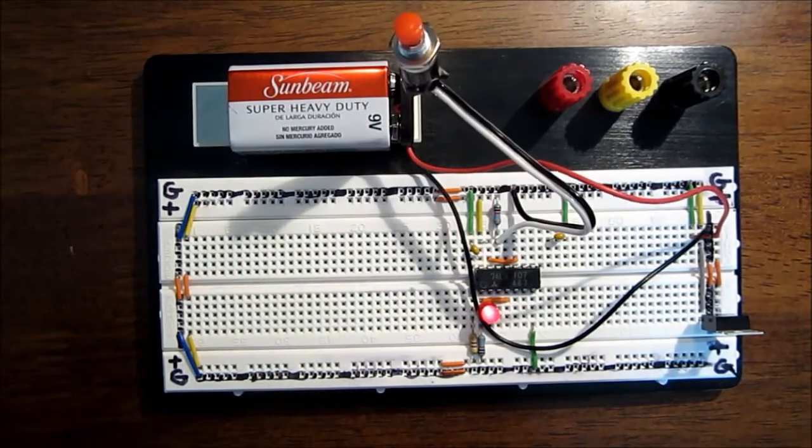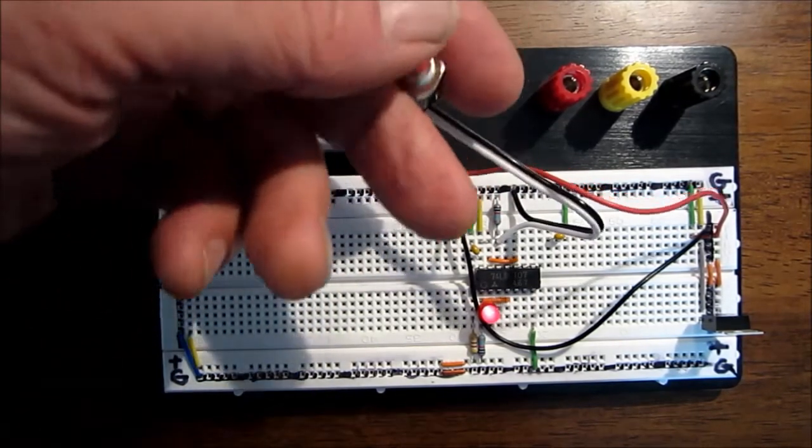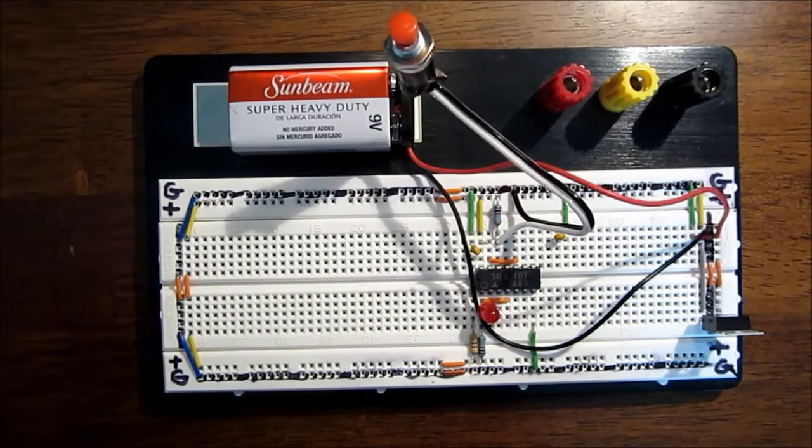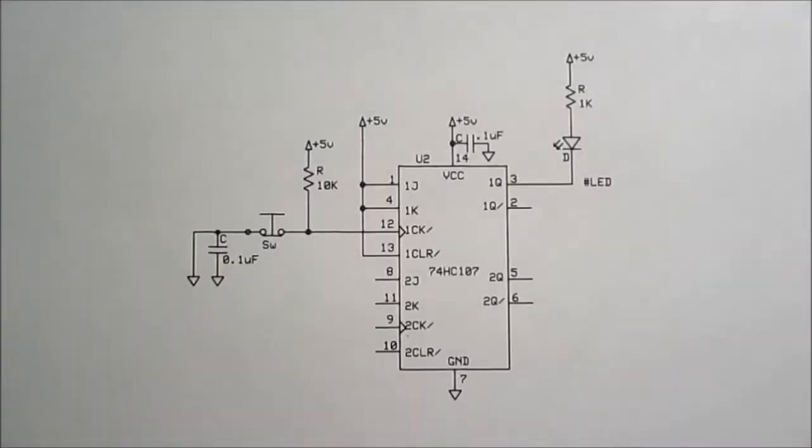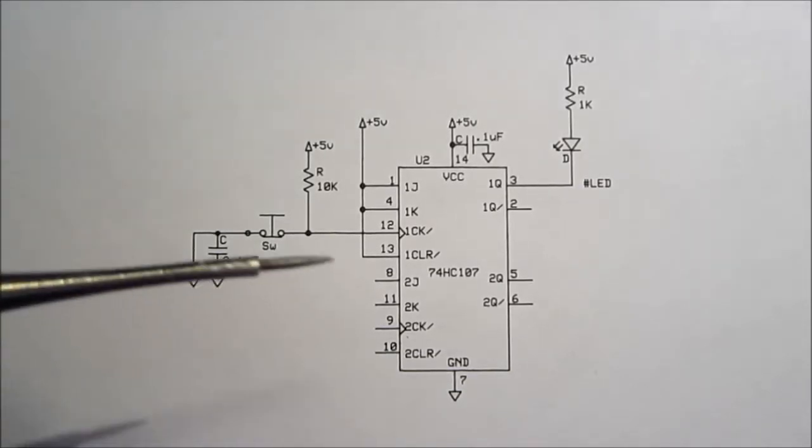So he goes, oh, I must have made a mistake in the circuit someplace or whatever. So off he goes and he tries to find the problem. Well, after some extensive troubleshooting, it's his turn to get that old sinking feeling. Because what he finds out is that he has wired the circuit correctly. But the problem is in this mechanical switch here.